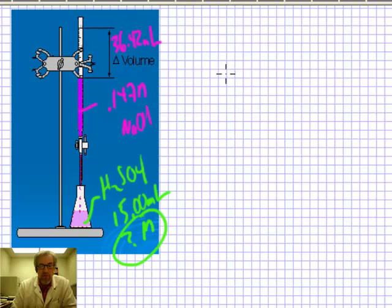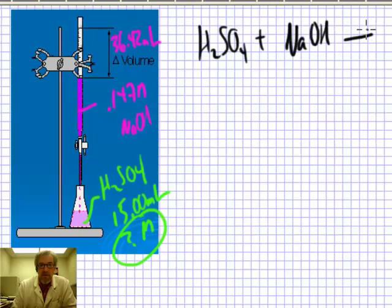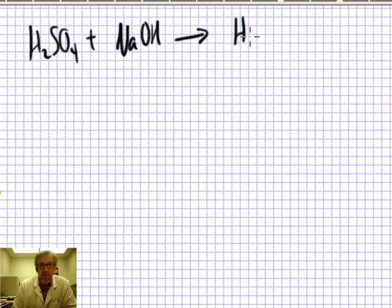In any titration problem, you need a balanced chemical equation. If you don't have a balanced chemical equation, then that's probably the objective of the titration, to determine what the stoichiometry is. Here, we do know what's reacting. H2SO4 is in the flask, and it's reacting with NaOH, which is in the burette.